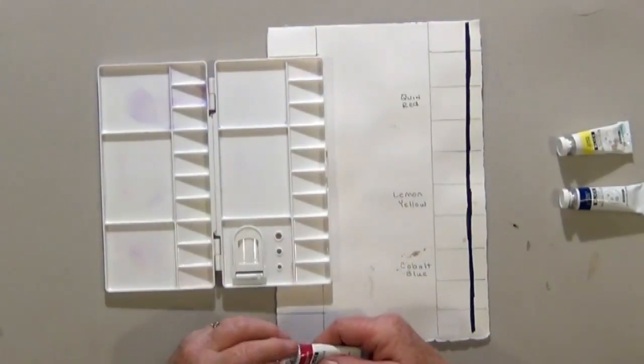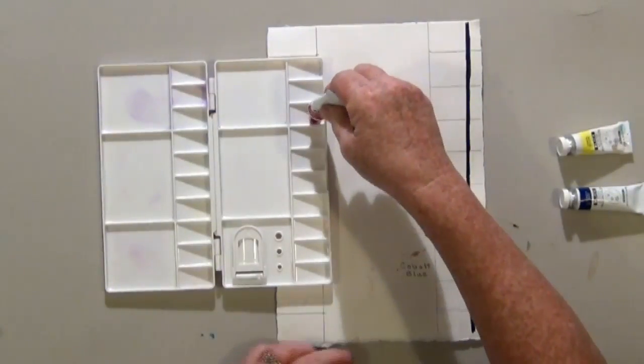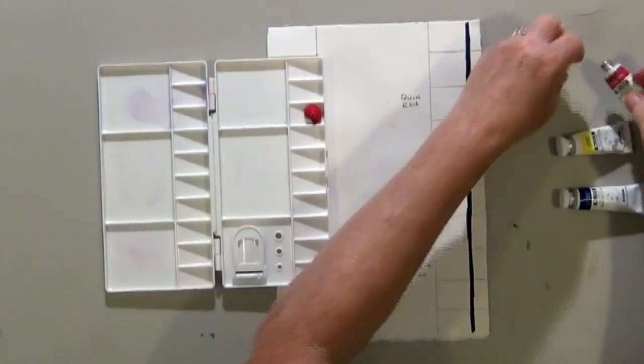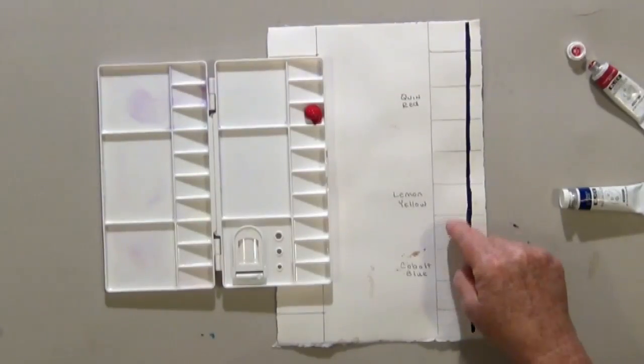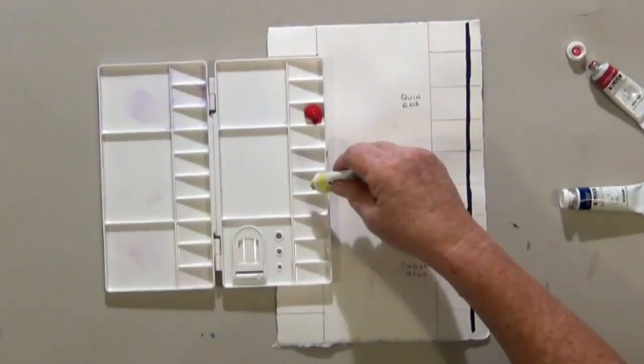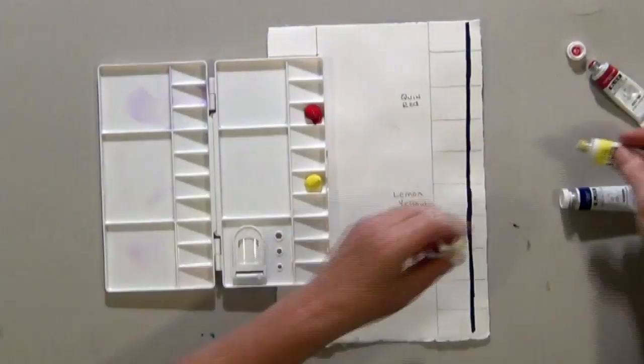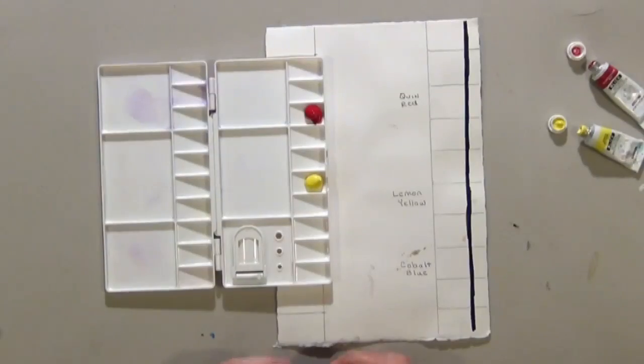So I'm going to put the quinacridone red in here. The lemon yellow goes in 1, 2, 3, 4, 5, 1, 2, 3, 5, this one. And the cobalt blue goes in here.